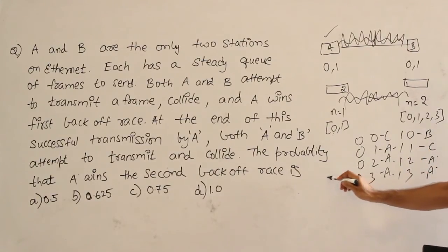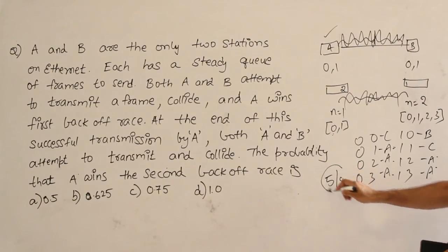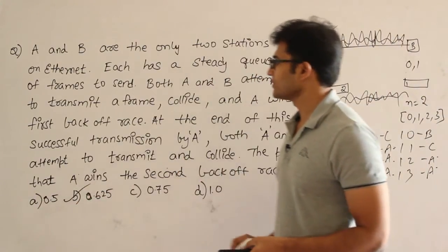1, 2, 3, 4, 5. So, A won 5 out of 8 which is nothing but 0.625. This is the answer. We already solved this question in that CSMA/CD.